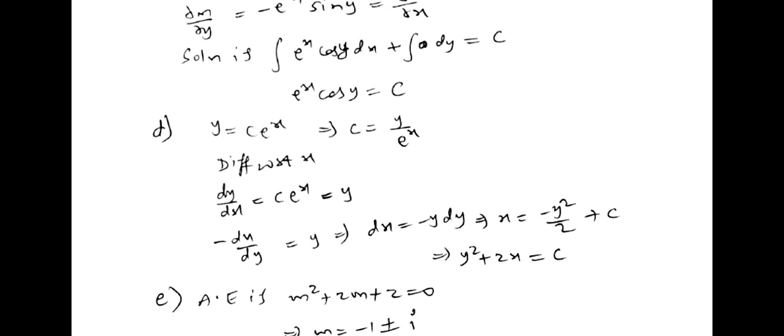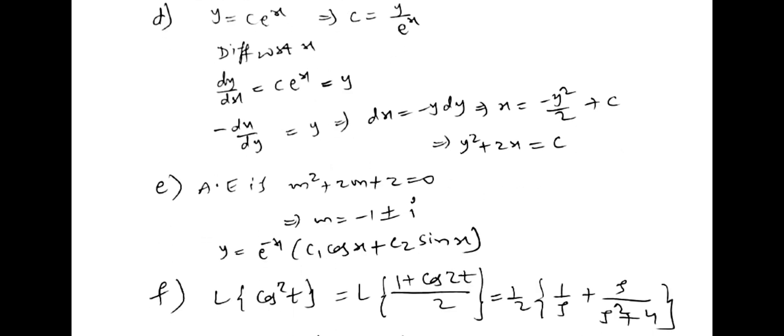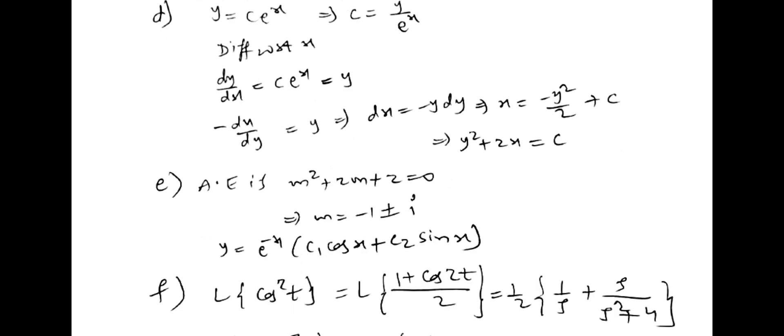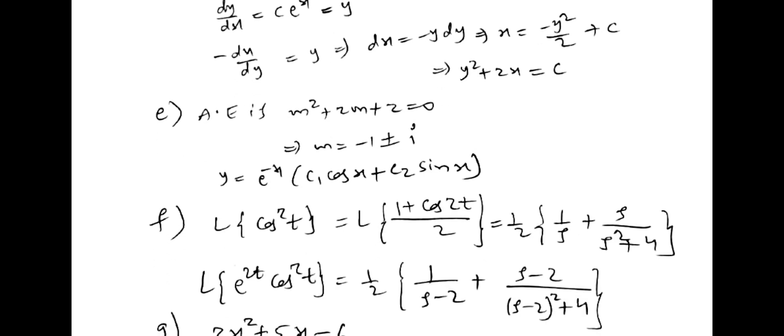Then D bit mark. Y is equal to C e power x and C is equal to 1 by e power x. Differentiating with respect to x, it become e power, d by dx is equal to C e power x, that is y. Then dx, then integrate here. You will get the y square plus 2x is equal to C. Then auxiliary equation m square plus 2m plus 2, you get the complex roots here. That is the CF.